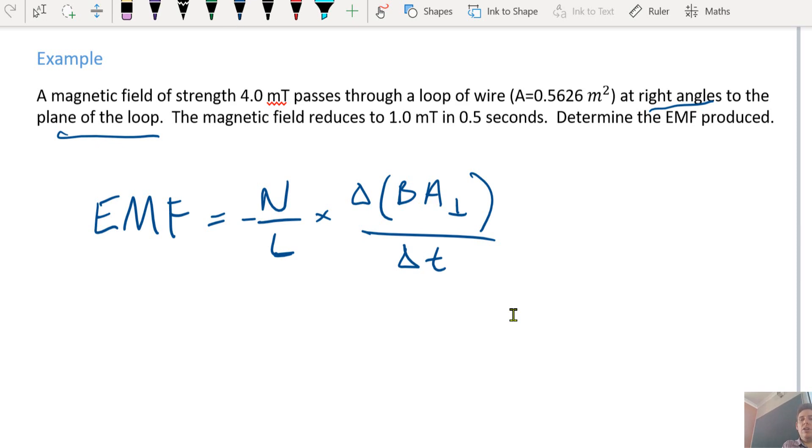I'll do the cos version. N is number of loops, so we've got one, one per meter, and we've got a change in B.